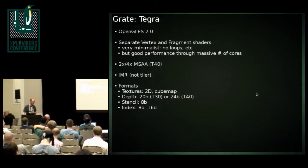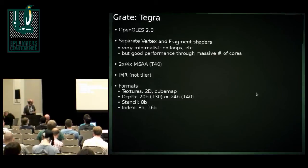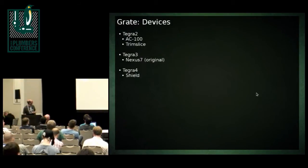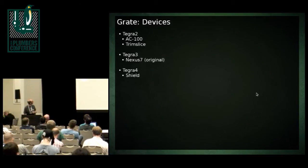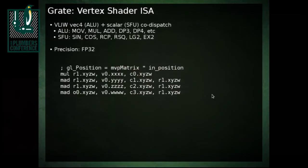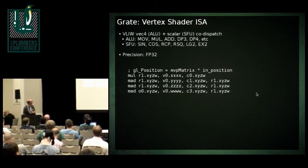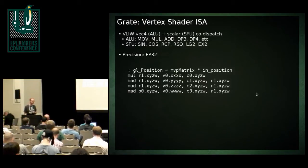It can do GLES-2, no ES-3, no CL. It's in a handful of nice devices, like the AC-100, which is a nice little device for hacking on, and of course the Trim Slice. The vertex shader is fairly straightforward and pretty well understood. It's VLIW with a fused VEC4 plus scalar operation, which makes it a little bit similar to the Adreno 200 stuff. Precision is 32-bit float.